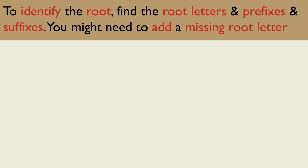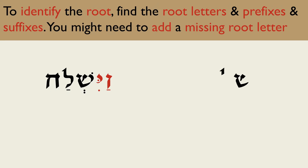In the verb Vayishlah, the Vov and the Yud are both prefixes. The remaining letters are Shin, Lamed, Ches — the root meaning 'to send.'